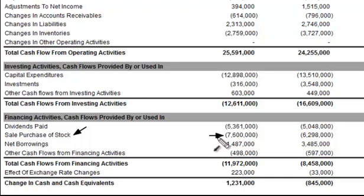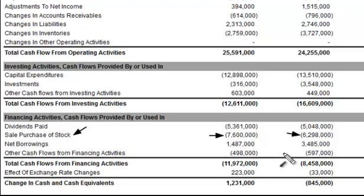On the other hand, if you had a positive number here, then you would know that the company was raising cash by selling its own stock out of the treasury back onto the market. That, of course, dilutes current shareholders. But in this particular case with Walmart, we can see that there is consistent buyback of their own shares, which is a good thing.